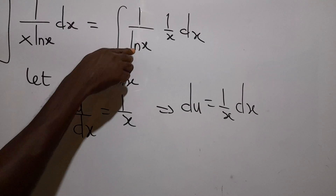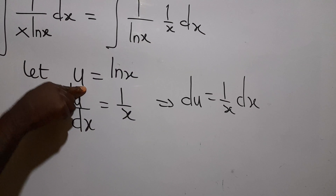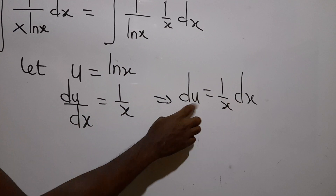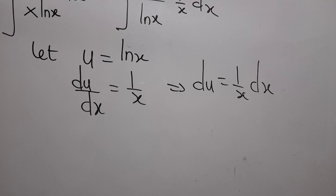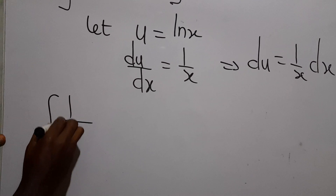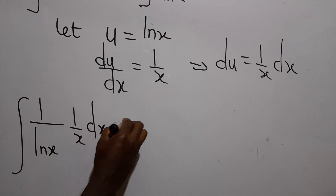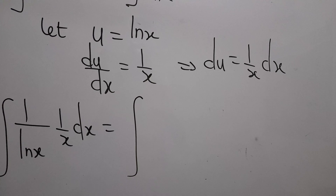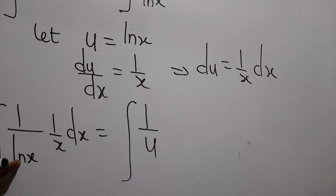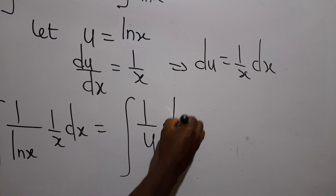Back to our problem: in place of ln(x) we substitute u, and in place of 1 over x dx we substitute du. So the integral of 1 over ln(x) times 1 over x dx becomes the integral of 1 over u du.